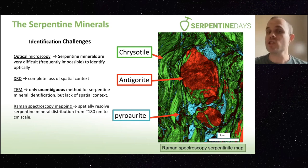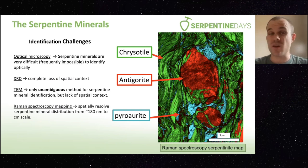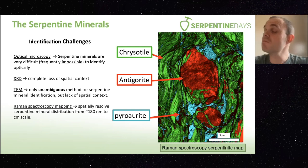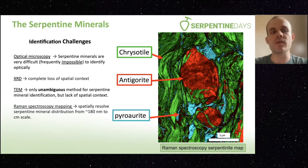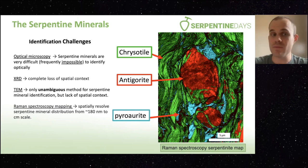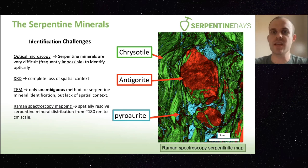There are some pretty serious challenges, especially from someone interested in microtectonics and microstructure. Optical microscopy is often kind of useless — you can't identify individual minerals, except maybe antigorites. XRD can do the job but you lose your context. TEM is kind of the gold standard — you can identify any serpentine mineral you like — but it's incredibly difficult to maintain spatial context. So what I've been playing with is combining some of these techniques along with Raman spectroscopy mapping at a submicron level, which allows us to spatially resolve our main serpentine minerals down to about 180 nanometers.